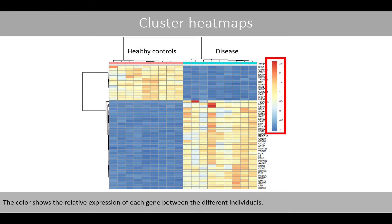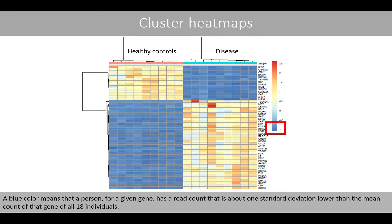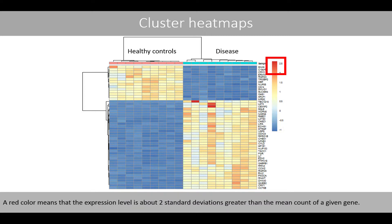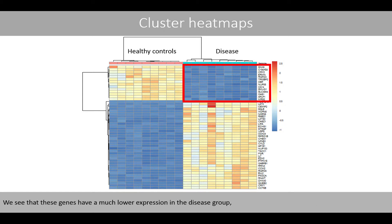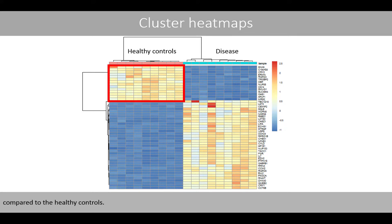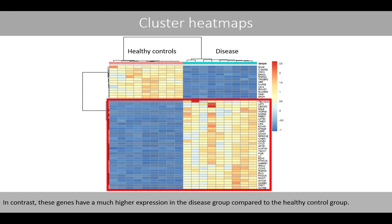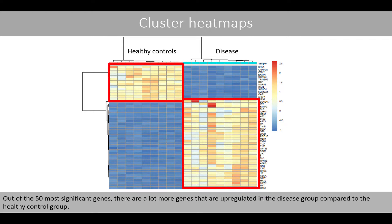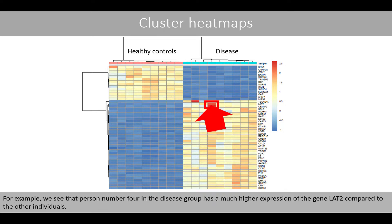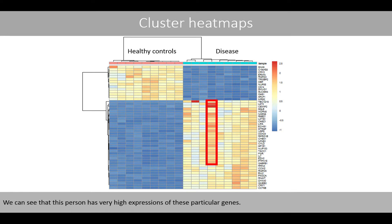The color shows the relative expression of each gene between the different individuals. A blue color means that a person for a given gene has a read count about one standard deviation lower than the mean count of that gene across all 18 individuals, and a red color means the expression level is about two standard deviations greater than the mean. We see that some genes have much lower expression in the disease group compared to healthy controls, while others have much higher expression in the disease group. For example, person number 4 in the disease group has a much higher expression of the gene LAT2 compared to the other individuals.